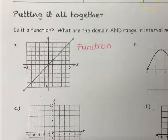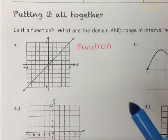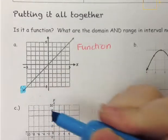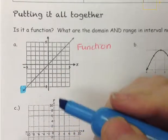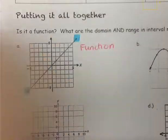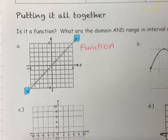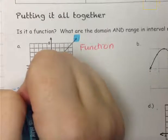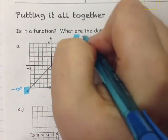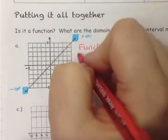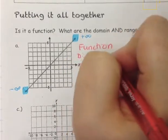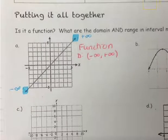Now to determine the domain and range — for the domain I'm going to focus on left and right, using blue highlight. I find my farthest left point, which is an arrow, and my farthest right point, which is also an arrow. When there are arrows, there are infinities. The left arrow is negative infinity, the right arrow is positive infinity. So our domain is: open bracket, negative infinity, comma, positive infinity, open bracket — because infinity is never actually reached.